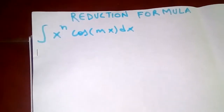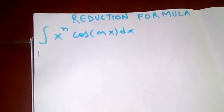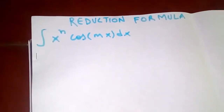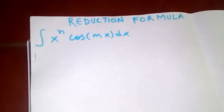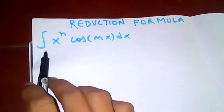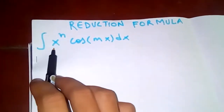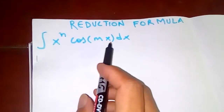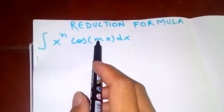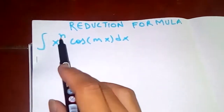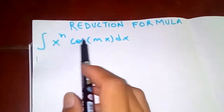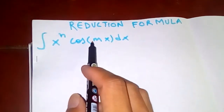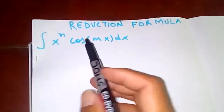Thanks for watching my video. Today we are going to discuss our reduction formula. Here is the integral of x to the n times cos(mx) dx, where m and n are any positive integers.